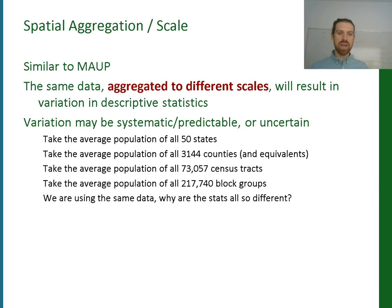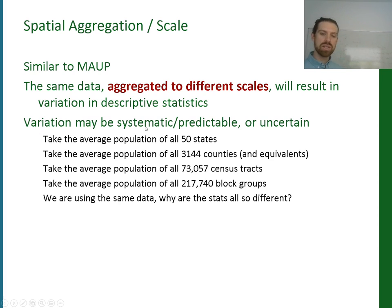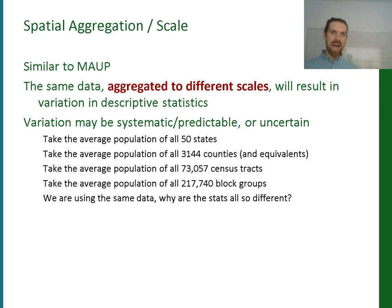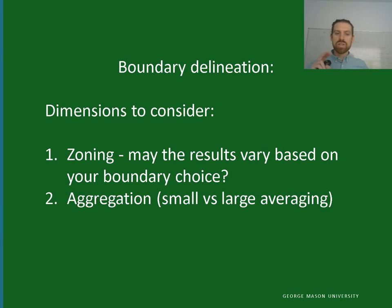Spatial aggregation across scales is closely related to the MAUP — it's the same data aggregated to different scales resulting in variation in descriptive statistics. The variation may be systematic, predictable, or uncertain. If you take the average population for states versus counties versus census tracts versus blocks, you're using the same underlying data but you'll end up with very different statistics. At the granular level you'll see far more variation; at the state level you're averaging away the underlying nuance and getting a very aggregated understanding. There are two things to consider: zoning and aggregation.